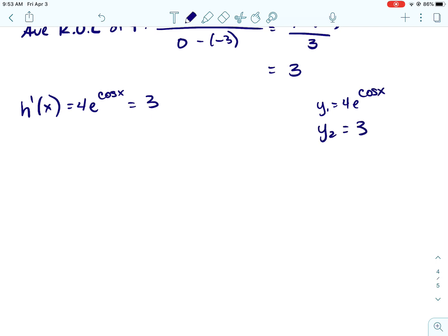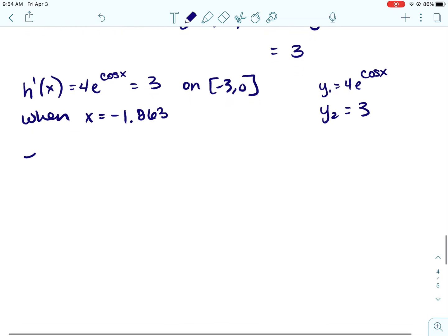So again, it's just using the calculator. So for Y1, you would put in, it doesn't matter whichever one you want to, and then for Y2 you would put in the other one and find where they cross on that interval from negative 3 to 3. So h prime of x equals 3 on the interval from negative 1.863. Now if you truncated it, you would have a 2, so 2 or 3 there at the end is fine.